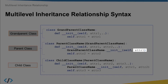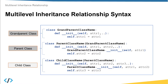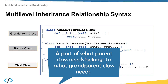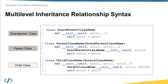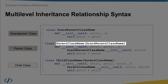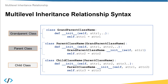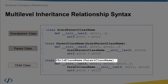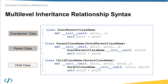The parent class will pass only atr1 because that is all the grandparent class needs, and the child class will pass atr1 and atr2 because that is what the parent class needs. Part of what the parent class needs belongs to what the grandparent class needs. To make the parent class inherit from grandparent, add the grandparent class name in parentheses after the parent class name. Similarly, to make the child class inherit the parent, add the parent class name in parentheses after the child class name.